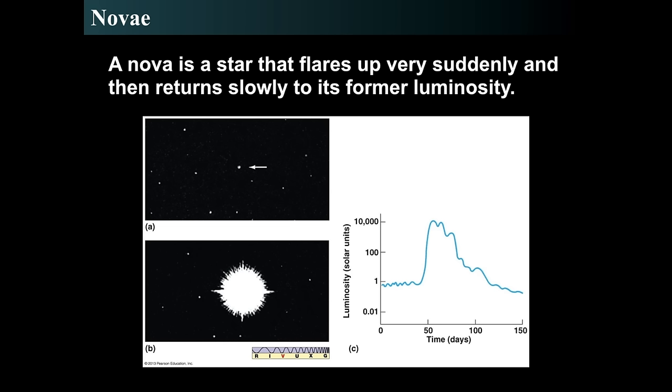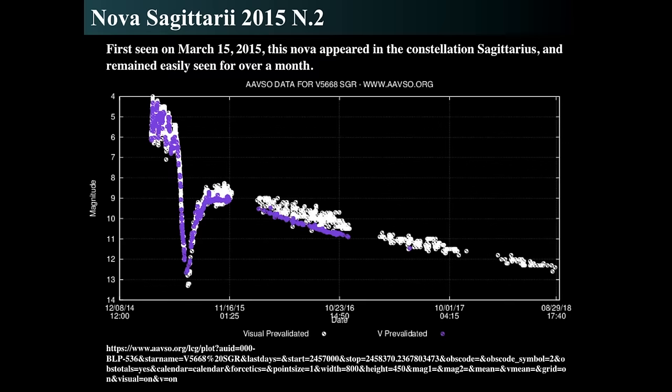The term nova means 'new star.' A more recent example is Nova Sagittarii 2015, number two — the second nova appearing in the constellation Sagittarius in 2015. It got really bright, with the purple dots representing Johnson V magnitude, which was highly variable by a magnitude or two even within a day.